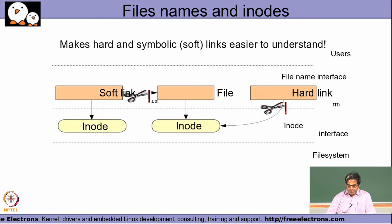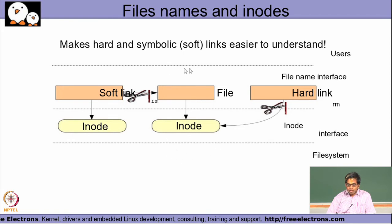With a soft link, a different inode is created for the link file name. With a hard link, the link points to the same inode and the link count inside that inode is incremented. If you remove a hard link name, the file contents pointed to by that inode are never deleted by the file system unless the reference count reaches zero. That is the core difference between a soft link and a hard link.